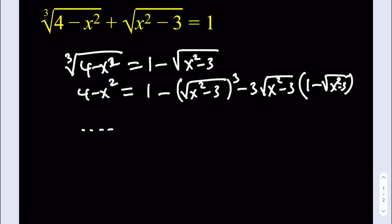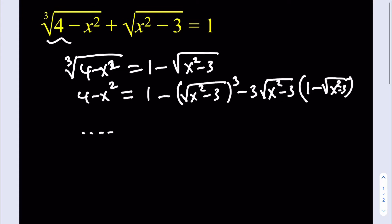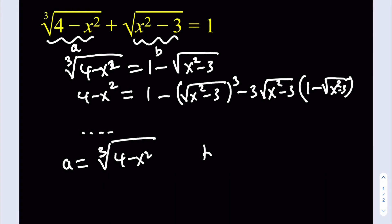We're going to use a very powerful method called substitution. How can we use substitution here? Instead of calling something q or u, we're going to do it a little differently. I'm going to call the first expression a — that's the cube root of 4 minus x squared — and the second expression b, which is the square root of x squared minus 3.